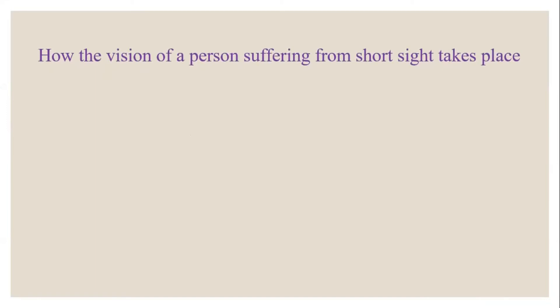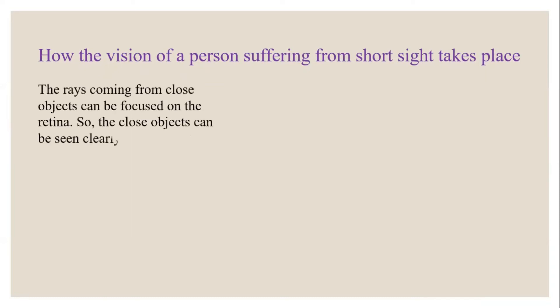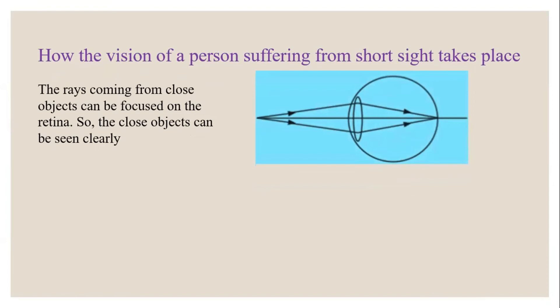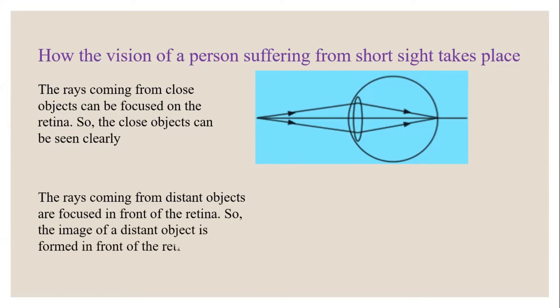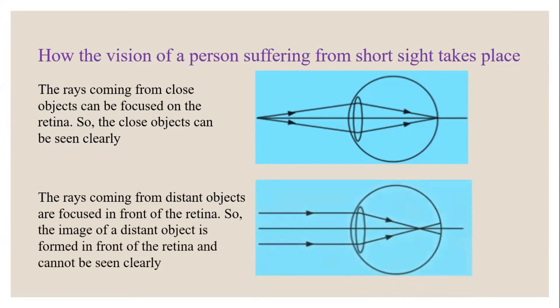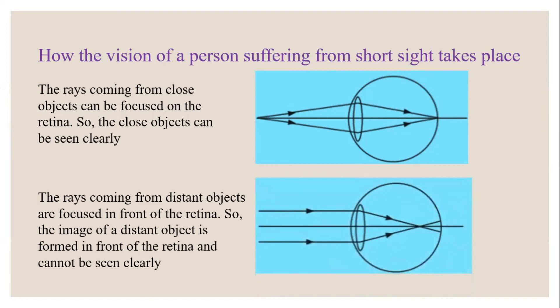A person suffering from short sight can focus rays from close objects onto the retina, which is why they can see nearby objects clearly. However, rays coming from distant objects are focused in front of the retina, so the image of a distant object is formed in front of the retina and cannot be seen clearly. The parallel light beam coming from a far away object cannot focus onto the retina — they converge in front of it.